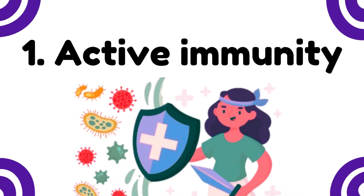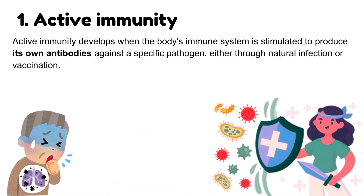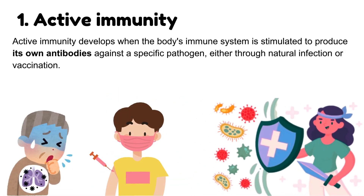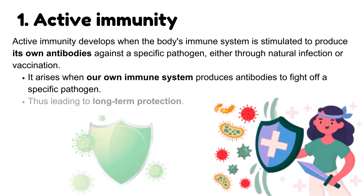Active Immunity develops when the body's immune system is stimulated to produce its own antibodies against a specific pathogen, either through natural infection or vaccination. It arises when our own immune system produces antibodies to fight off a specific pathogen, thus leading to long-term protection.